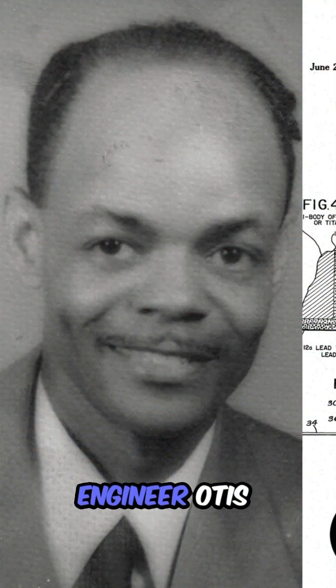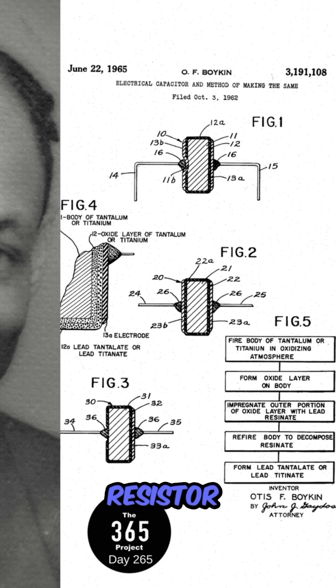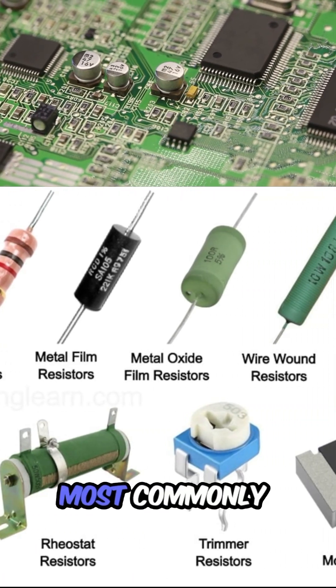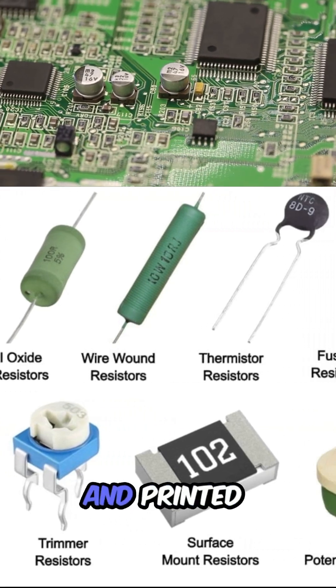African-American electrical engineer Otis Boykin invented the first wire precision resistor in 1959, and since then, they've become arguably the most commonly found component in electronics and printed circuit boards.